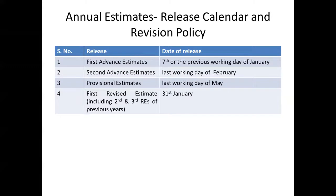As regards the Release Calendar and Revision Policy of Annual Estimates, First Advanced Estimates are released on 7th January. In case 7th January is a holiday, the First Advanced Estimates are released on the previous working day. Second Advanced Estimates are released on the last working day of February. Provisional Estimates are released on the last working day of May. The First Revised Estimates, including second and third Revised Estimates of the previous year, are released on 31st January.